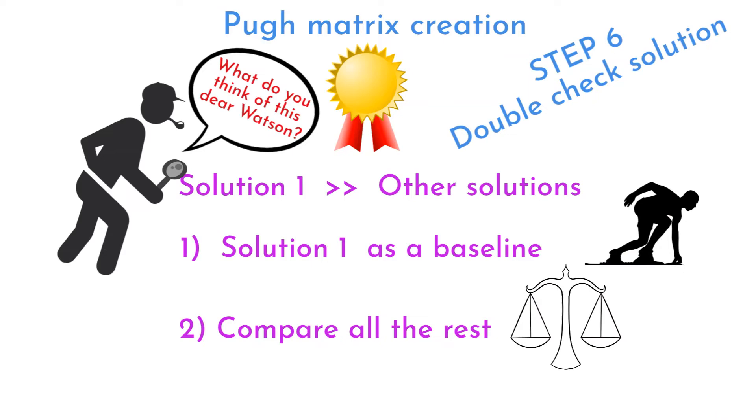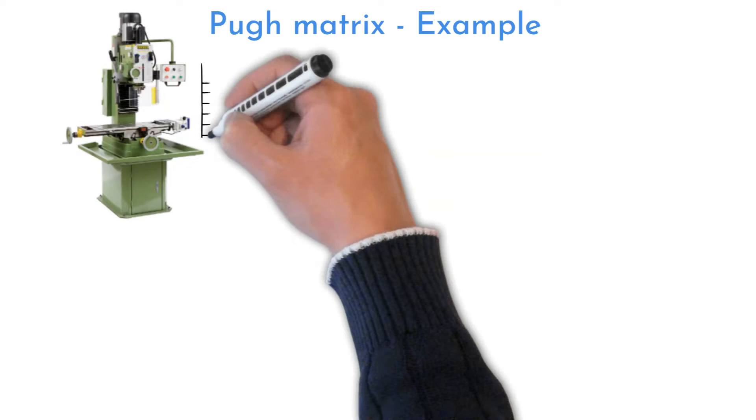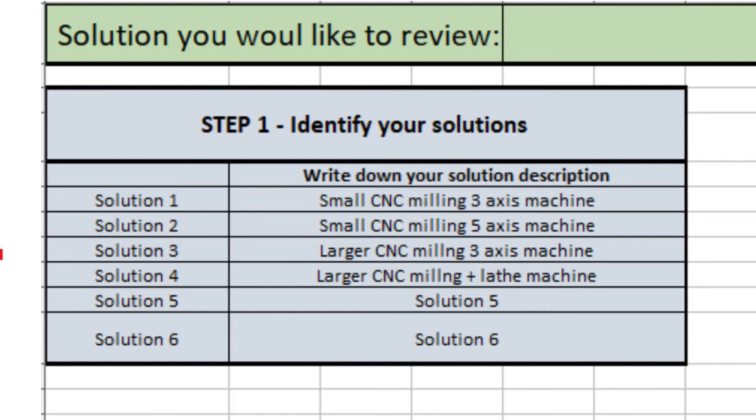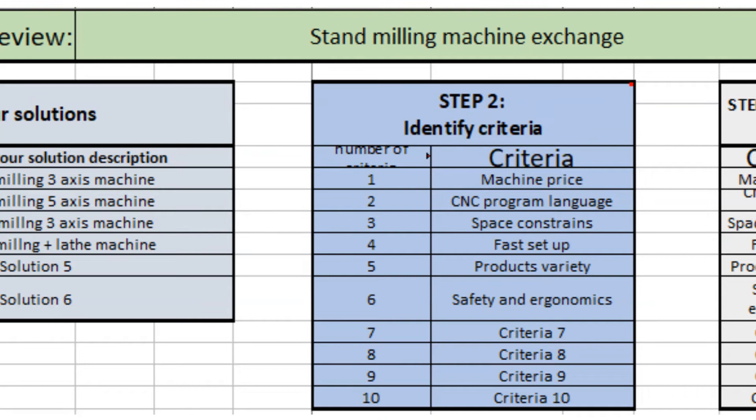Let me give you an example of Pugh Matrix evaluation. Production team is solving capacity constraints on standard manual milling machine. There are four solution ideas that were brainstormed and reviewed as an option in previous project meetings. Machine price, program language, space constraints, machine setup speed, product variety, and safety and ergonomics were identified as key choosing criteria. There you can see impact levels team have chosen for each criteria.